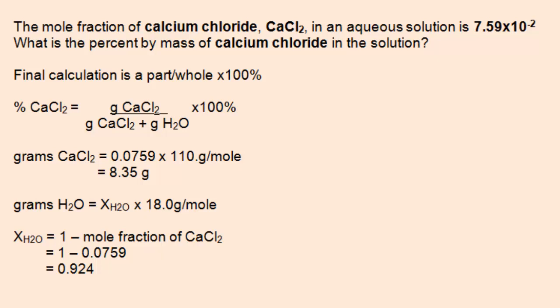Next, we need to determine the grams of water. And that calculation would be very similar to the calculation that we just carried out for calcium chloride. If we were to determine the mole fraction of water, subtract the mole fraction of calcium chloride from 1. This is because the sum of the mole fractions in any solution is 1.